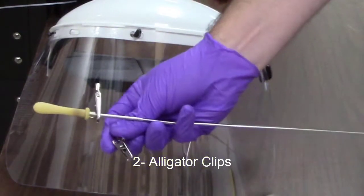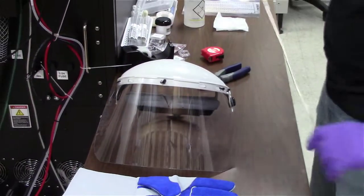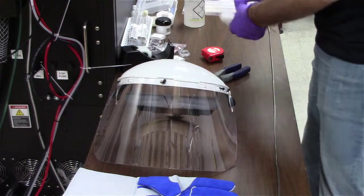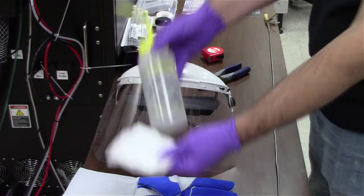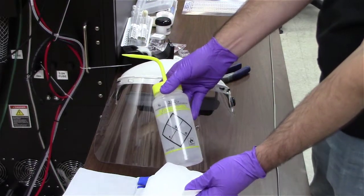You will need two alligator clips on the end of the rod. It is also recommended that you clean everything as you're going in, so I'm going to use isopropyl alcohol.